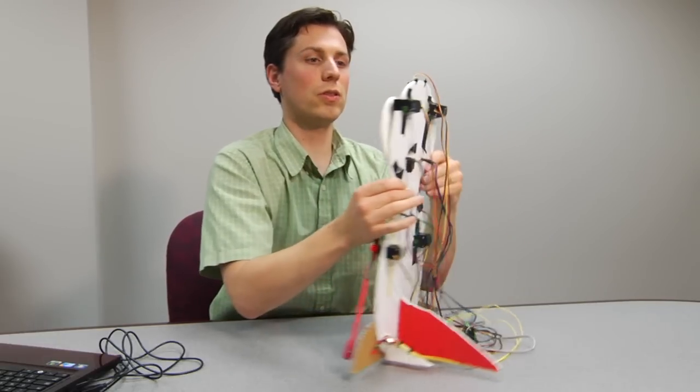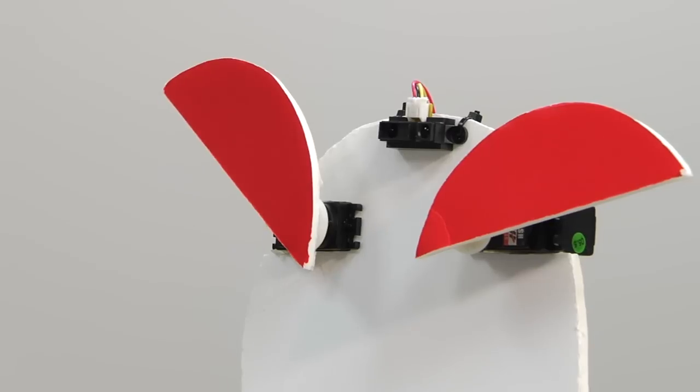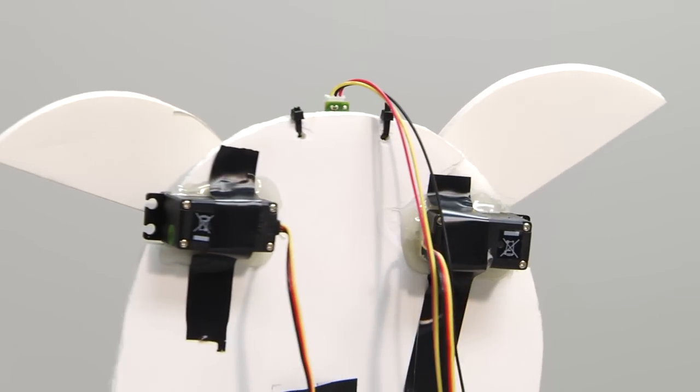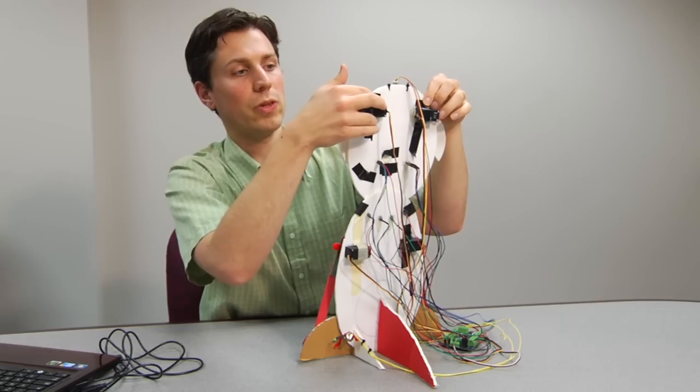You can hot glue things to it. So the servos are attached. They have little rectangular cutouts so that you can push the servo through and then they're attached with hot glue and reinforced with some electrical tape.